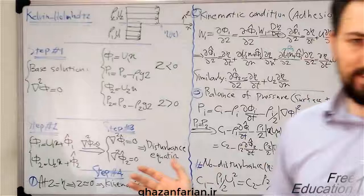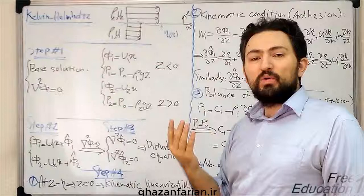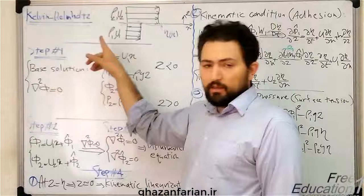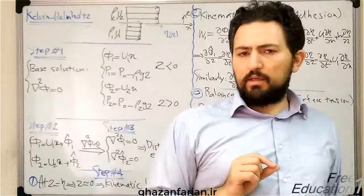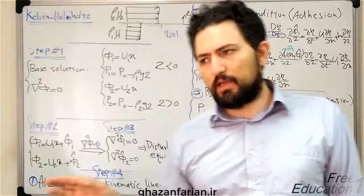Any instability analysis needs an input. The input of all instability analysis is a velocity profile. As you see in this figure, these vectors or arrows show the base velocity in the base, or undisturbed, flow. I'm going to suppose the flow to be irrotational, so I can use the governing equation for irrotational flow — the Laplace equation. This is the potential function. When the flow is irrotational and incompressible, I can use the Laplace equation to describe the motion of the fluid by means of the potential function phi.